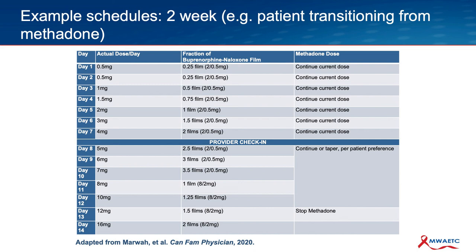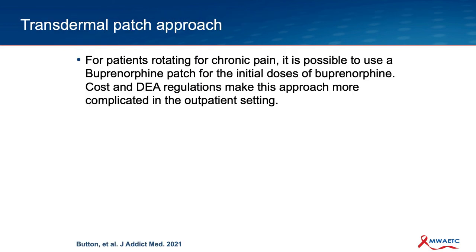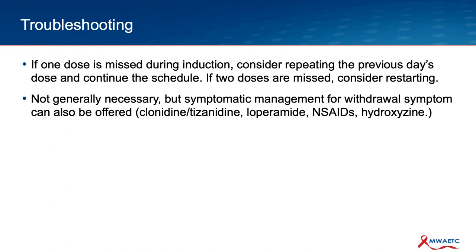Another thing I'd stress is that it's okay to be flexible — if a patient wants to take longer, you can take slower steps. There is also transdermal buprenorphine, which is FDA approved for pain. Pharmacologically, it's a good way to gradually introduce low levels of buprenorphine into the system. Some protocols involve its use in the first two days before getting on to sublingual, and it kind of avoids the scenario where you're cutting films. But the cost and the fact that it's not FDA approved for opioid use disorder limits its use in many settings. If the patient misses a dose during induction, you'd probably want to repeat the previous dose and pick up where you left off; if two or more doses are missed, you might want to go back or consider restarting. Adjunctive agents such as clonidine, tizanidine, loperamide, NSAIDs, and hydroxyzine can make it more comfortable for the minority of folks who have bothersome withdrawal symptoms during the transition.